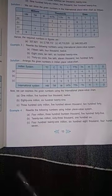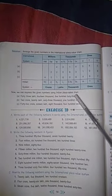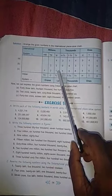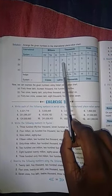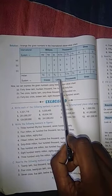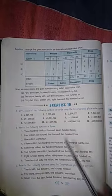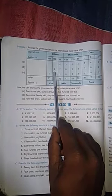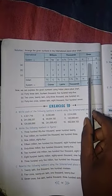Example 4: rewrite the following numbers using the Indian place value system. First, make both the Indian and international place value charts together and arrange the digits in the respective places. The number 4,03,14,545 — given as 40,314,545 in the international system — becomes 4,03,14,545 in the Indian system, that is 4 crore 3 lakh 14,545.